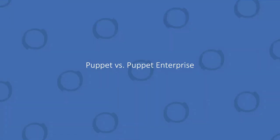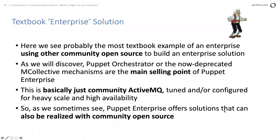Puppet vs. Puppet Enterprise. I think puppet is one of the more textbook examples here — they were one of the first open source technologies to really play with this open core model and learned a lot of lessons. What they did was take a textbook solution: folding another community project — in this case ActiveMQ — into the enterprise edition as what was originally M:Collective, now deprecated, and is called Puppet Orchestrator. This orchestration was the main selling point of Puppet Enterprise — they basically consumed another open source project, branded it, extended Puppet's functionality, and called it an enterprise edition.